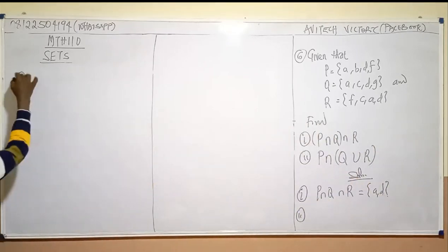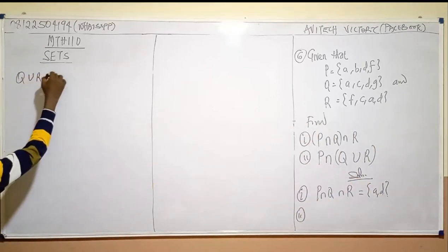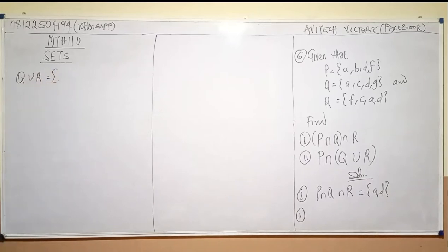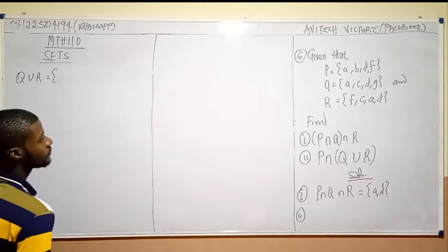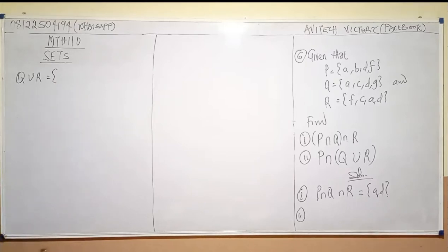I'll come here and I'll say Q union R will then become, what do you think will become Q union R? B, C, D. No, not intersection, union.